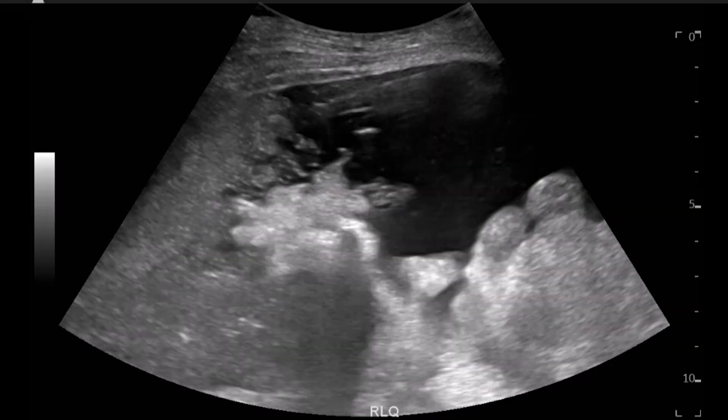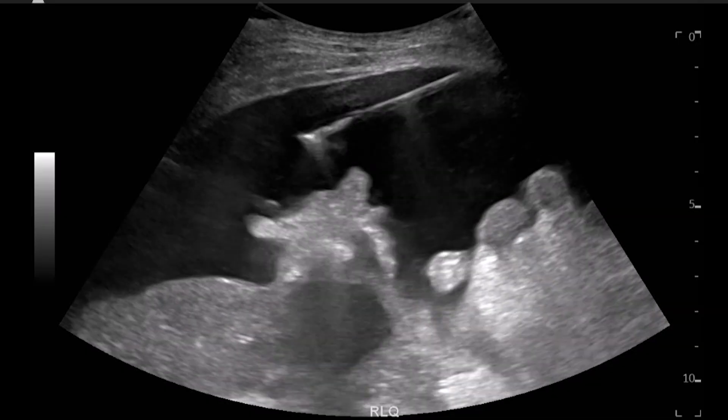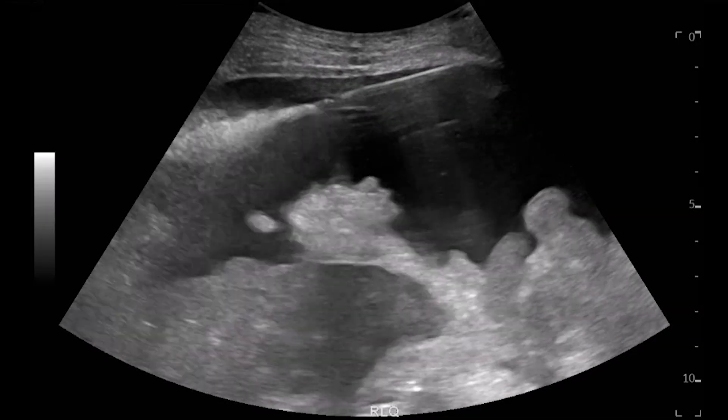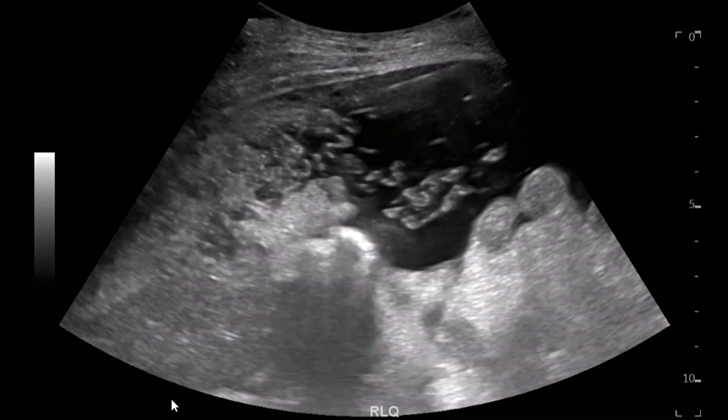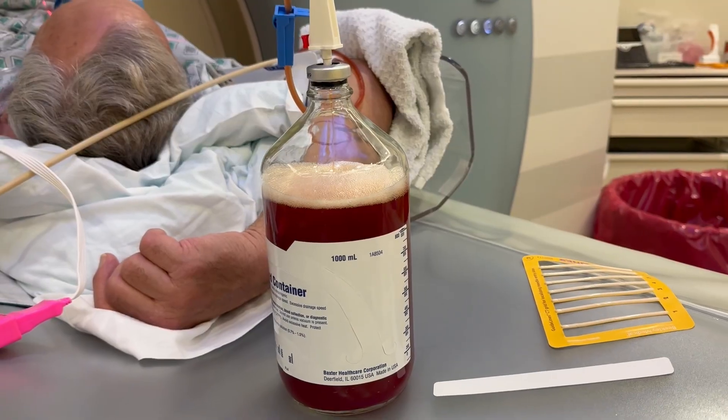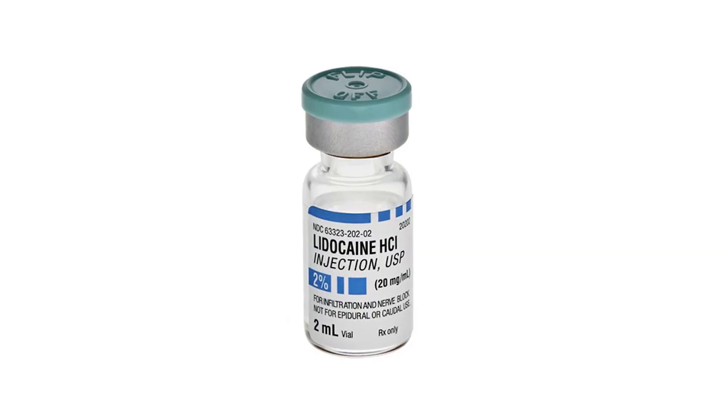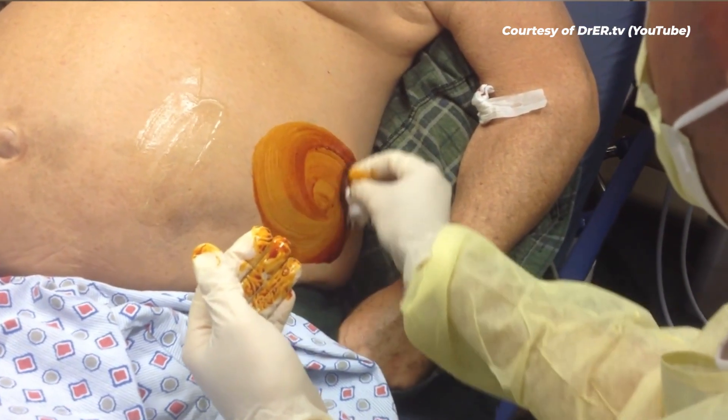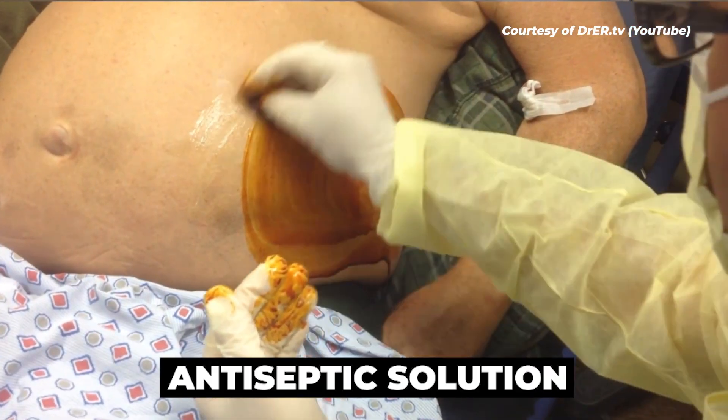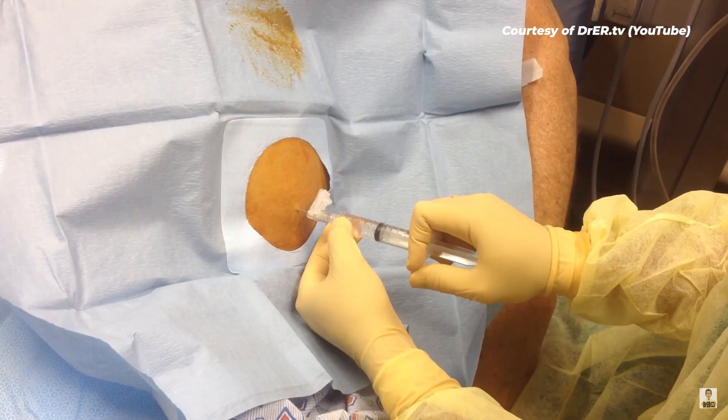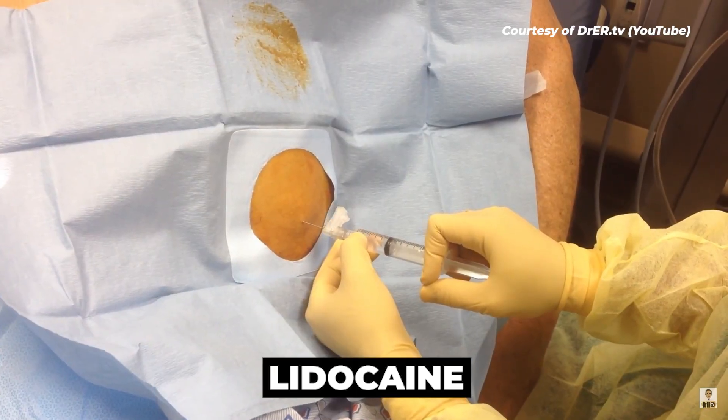The procedure is a pretty simple and safe procedure. Essentially, all we do is we introduce a needle through the skin into the peritoneal cavity, and then we connect this needle to a vacuum bottle or some type of suction system to remove the fluid. The procedure can be done in the office or in the hospital, and it's done with local anesthesia only. We clean the skin with an antiseptic solution, and then we give some local anesthetic with lidocaine.